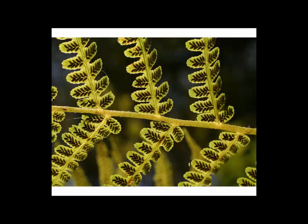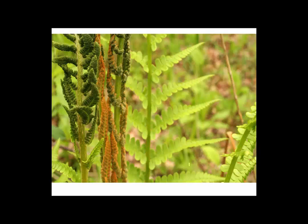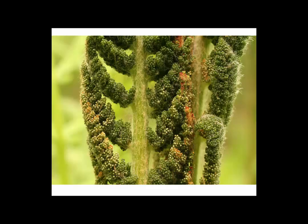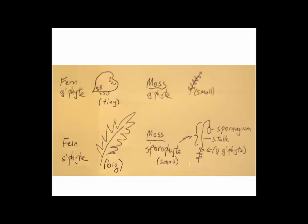Many ferns have their sporangia on the undersurface of otherwise normal-appearing leaves, such as this lady fern. Some ferns have specially modified leaves that are completely devoted to the production of spores, such as this cinnamon fern, with large sporangia. So if you had to describe basically what's up with the moss and fern sporophytes and gametophytes: the moss gametophyte is fairly small but it's the leafy plant — the stem with leaves — that forms the bed of the moss. The moss sporophyte is attached to the gametophyte and consists of a stalk and a sporangium, one sporangium. The fern gametophyte, on the other hand, is a really small thing about the size of a fingernail, and the fern sporophyte is the leafy thing that you would call a fern.